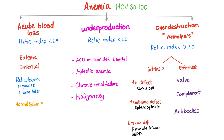Normocytic anemia can be due to acute blood loss, underproduction, or over-destruction. Over-destruction means hemolysis. Hemolysis can be intrinsic — the problem is inside the red blood cell — or extrinsic — a problem outside the red blood cell. The mechanisms are different: extravascular hemolysis and intravascular hemolysis, not to be confused with intrinsic versus extrinsic defect.